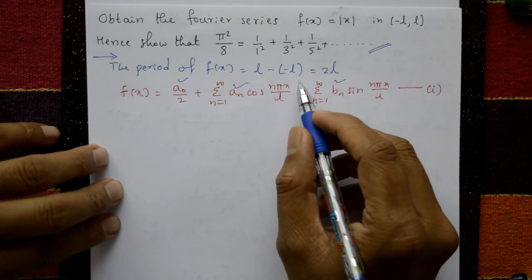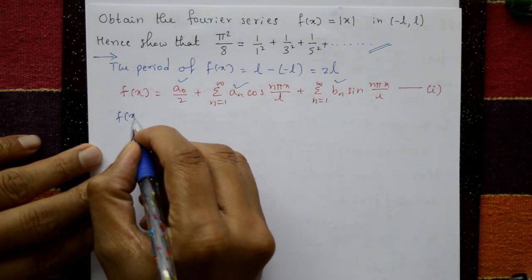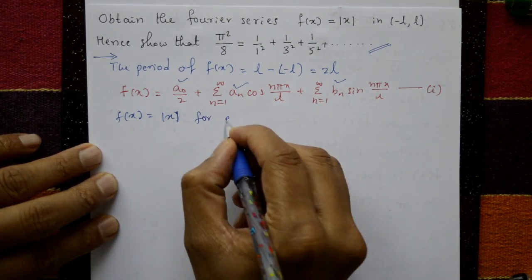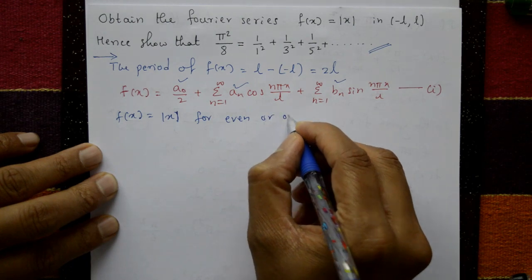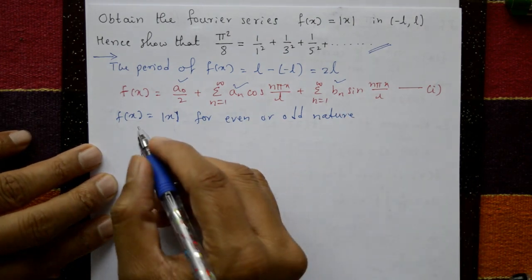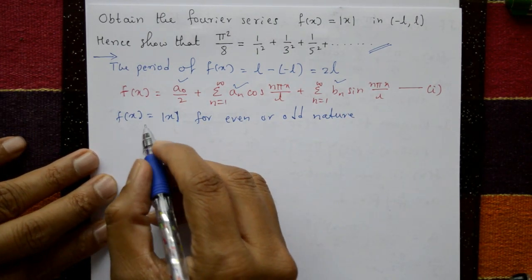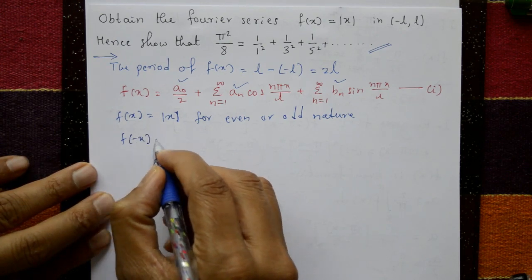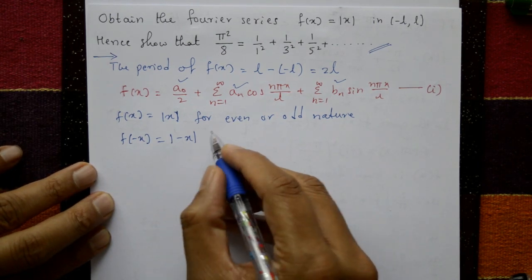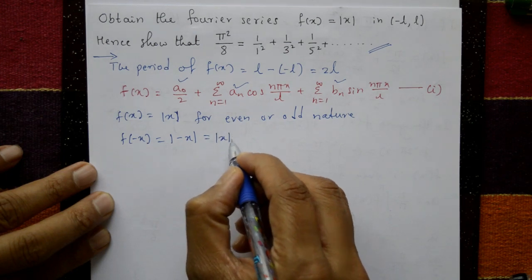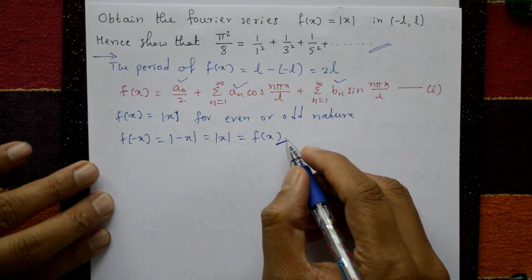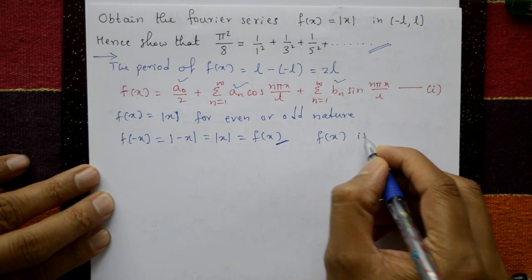First check whether this function is even or odd. f(x) = |x|. Put x = minus x: f(minus x) = |minus x|. Modulus means plus or minus, and the minus becomes mod x again. So f(minus x) = f(x), which means f(x) is even.